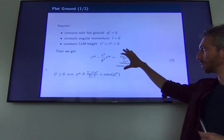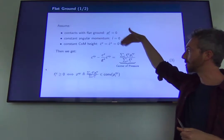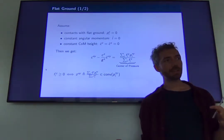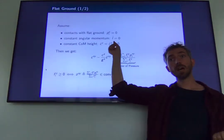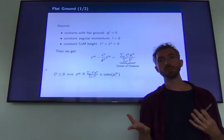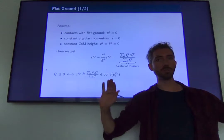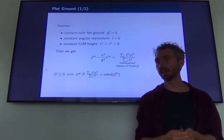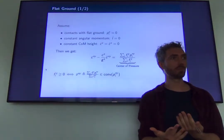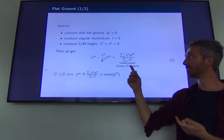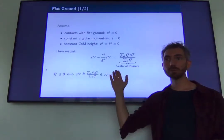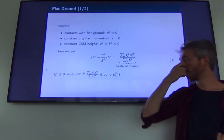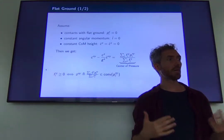We can use this model whenever the assumptions are satisfied, so it works for walking on flat or almost flat ground. It will not generalize to multi-contact locomotion — for example, climbing using hands, or using a handrail on stairs. It's a limited model, but one that everybody implements on legged robots and that works really well because it's linear. For more complex scenarios, people have extended this model.